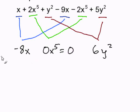Now we just simplify these terms. So our resulting expression would be negative 8x. Zero will go away plus 6y to the second power. And this completes our problem.